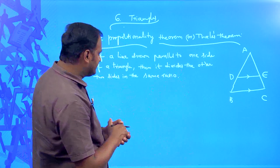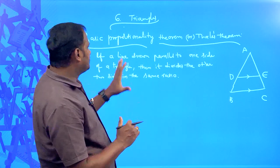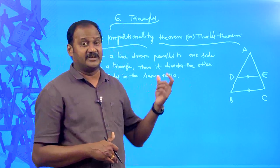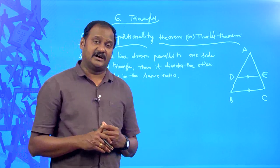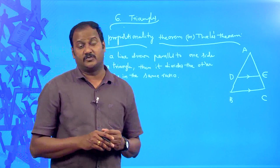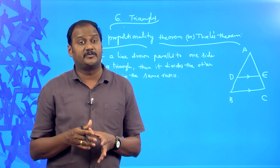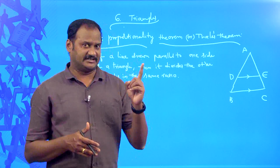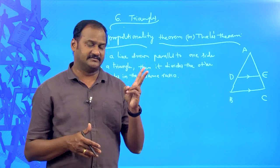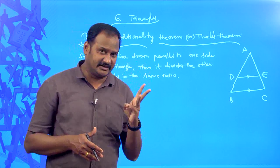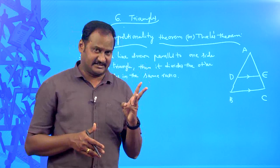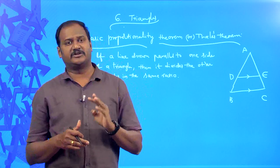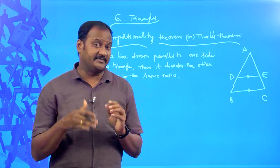Let us try to understand this statement and prove it. In order to prove the statement, the very first step is to analyze the statement and accordingly draw the figure. In grade 9, in the topic introduction to Euclid geometry, we learnt the logical sequence of steps involved in proving a mathematical theorem: first is hypothesis (what is given), second is conclusion (RTP — required to prove), third is construction if required, and fourth is the proof itself.